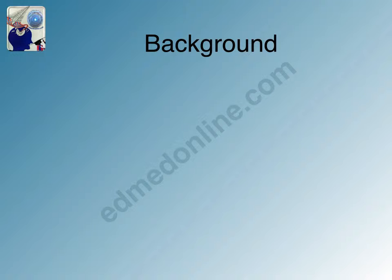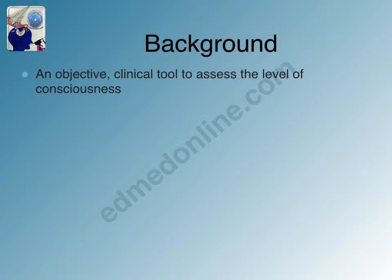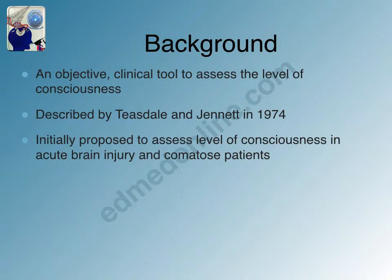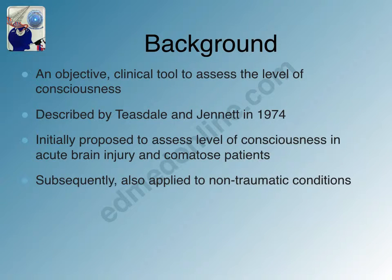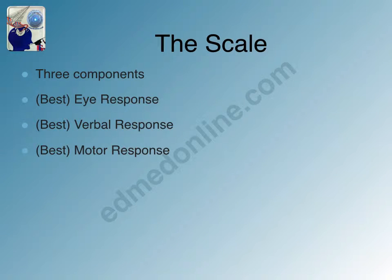Imagine having to communicate over the phone to your colleague about the neurological status of a person with head injury. How can you precisely describe the level of consciousness of this patient? This is the exact issue that Teasdale and Jennett addressed in 1974 by proposing the scale we now know as Glasgow Coma Scale, initially focused on assessing level of consciousness in acute brain injury and comatose patients, and subsequently expanded to various non-traumatic conditions.